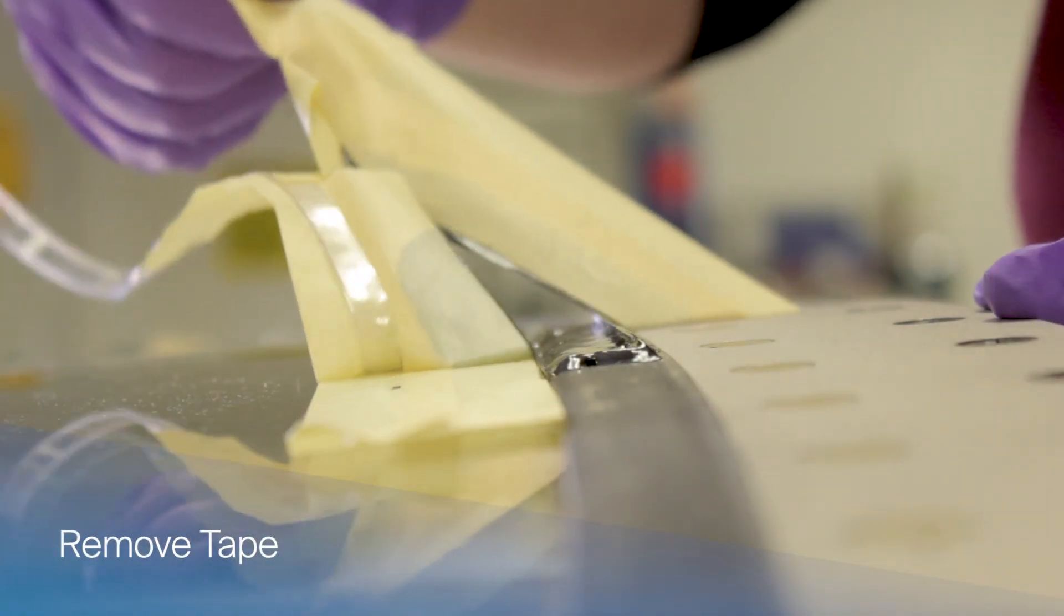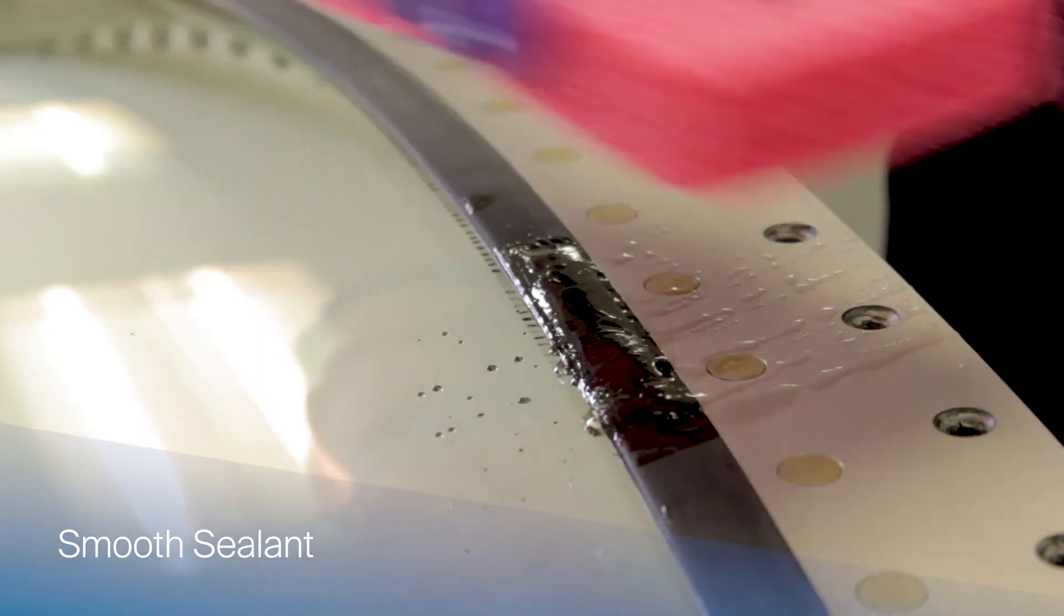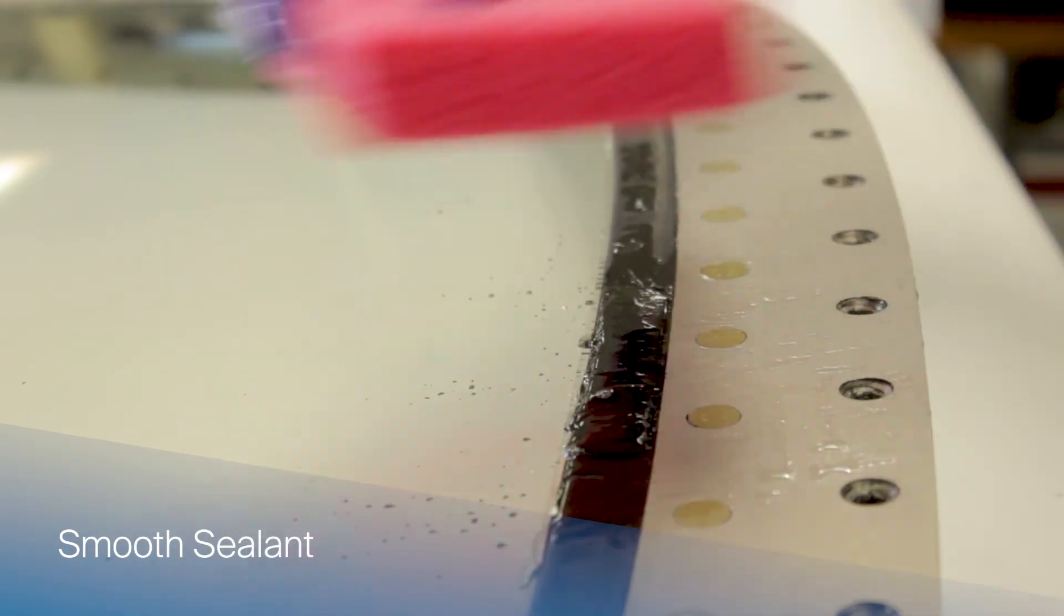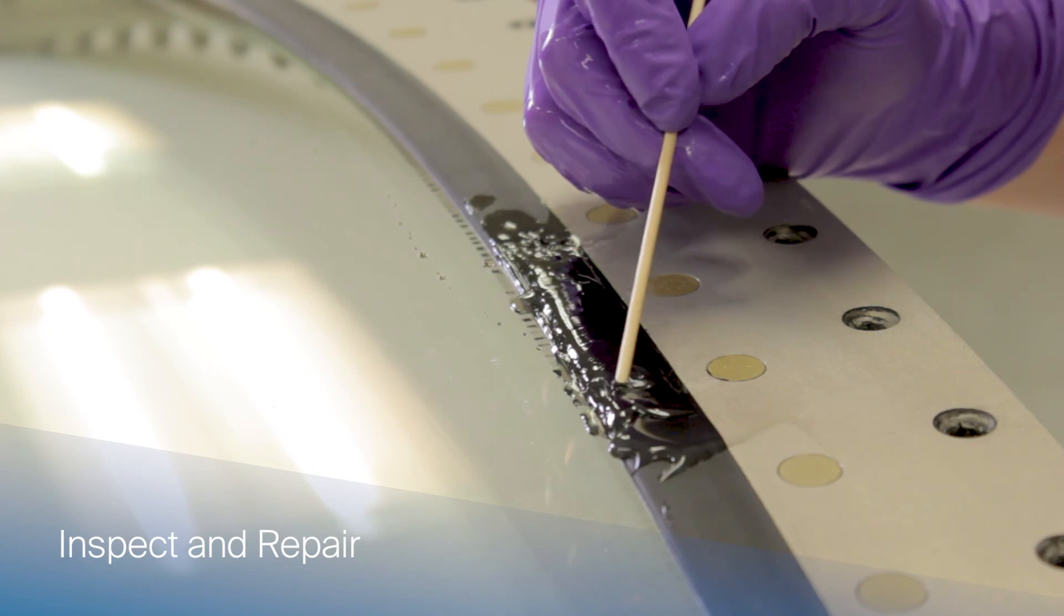Remove the masking tape. Smooth the surface of the wet sealant by moving lightly and briskly over the sealant with a wet cellulose sponge. Be sure to only use light pressure. Inspect the new seal for any voids and repair as necessary.